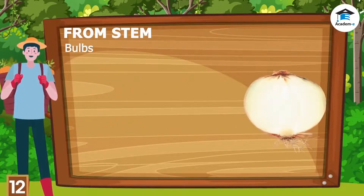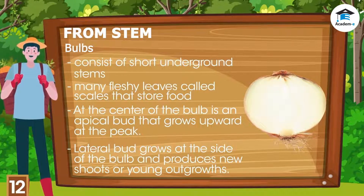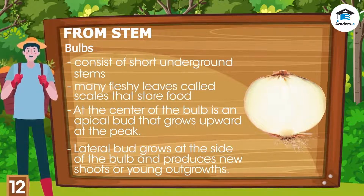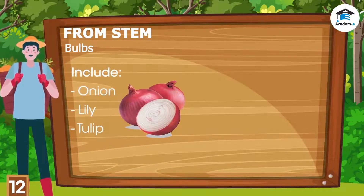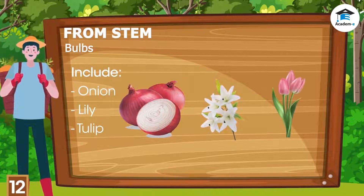Bulbs consist of short underground stems with many fleshy leaves called scales that store food. At the center of the bulb is an apical bud that grows upward, and at the peak, a lateral bud grows at the side of the bulb and produces new shoots or young outgrowths. Examples are onions, lilies, and tulips.